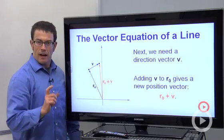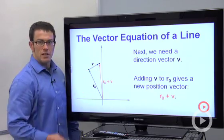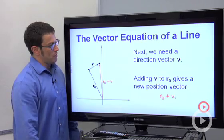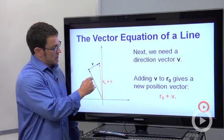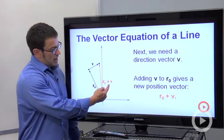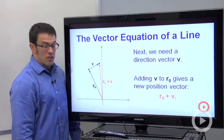Next, let's define a direction vector, v. This will give us the direction that our line will go. And notice, I've drawn v so that it's head to tail with r, so that I can add the two together and I get r0 plus v.